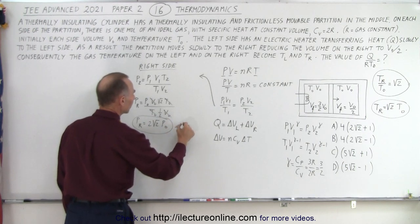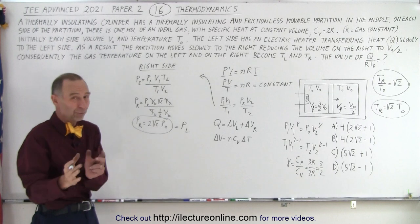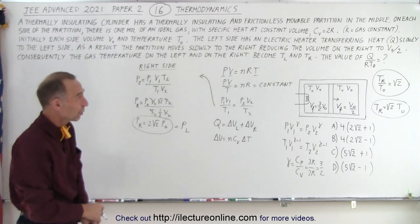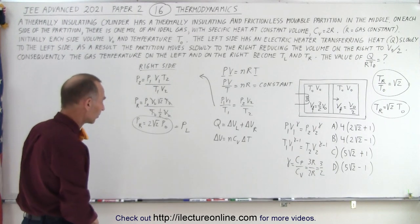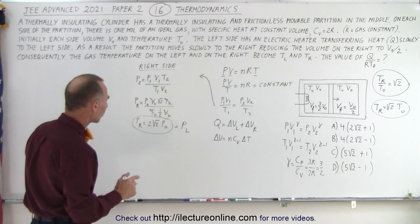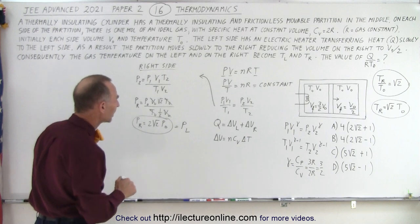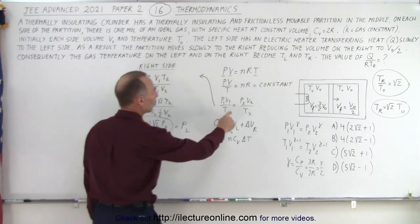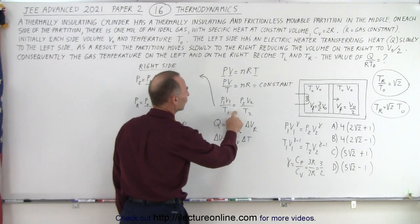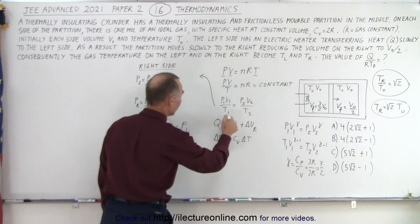And of course, we know that must equal P on the left side, because the pressure must be the same between the two chambers. Now that we know the pressure on the left side, we can use the same equation to find the final temperature on the left side.